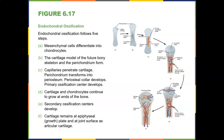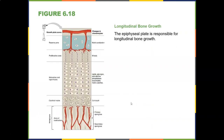The epiphyseal growth plates are where you continue to grow longitudinally. When these plates close, you stop growing taller and instead grow horizontally — meaning you no longer grow in height but only in width.